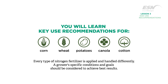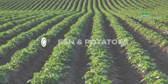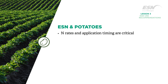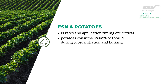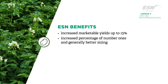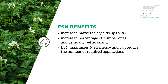In potatoes, nitrogen rates and application timing are critical. Potatoes consume 60 to 80 percent of total nitrogen needs during tuber initiation and bulking. ESN has increased marketable yields up to 15 percent, as well as the percentage of number ones, and generally provided better sizing compared to similar nitrogen treatments from urea or UAN.